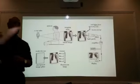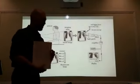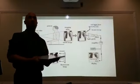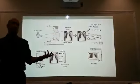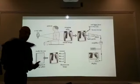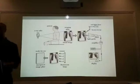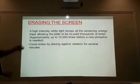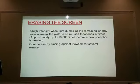Once it is erased, it puts it back into the cassette. We take our cassette out of the reader and it's ready to be used again — less than 20 seconds is all it takes for the whole process. The high-intensity white light dumps all the remaining energy, allowing the plate to be reused thousands of times over.